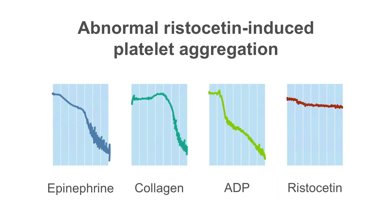This graph shows a patient with ristocetin induced platelet aggregation — with ristocetin the amount of platelet aggregation is negligible. However, platelet aggregation with ADP, collagen, and epinephrine are normal. This is the characteristic pattern of ristocetin induced platelet aggregation for von Willebrand's disease.